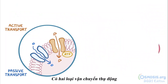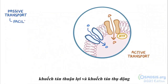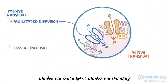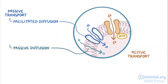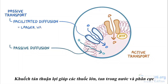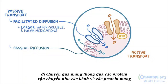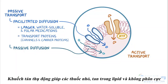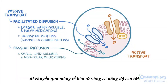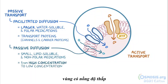There are two types of passive transport: facilitated diffusion and passive diffusion. Facilitated diffusion helps larger, water-soluble, and polar medications move across the membrane through transport proteins like channels and carrier proteins. Passive diffusion helps small, lipid-soluble, and nonpolar medications move across the membrane from an area of high concentration to low concentration.